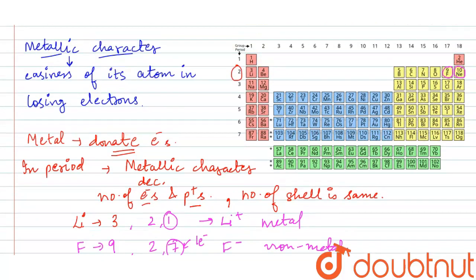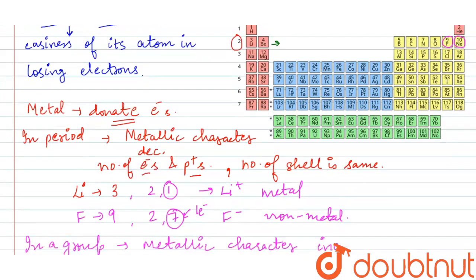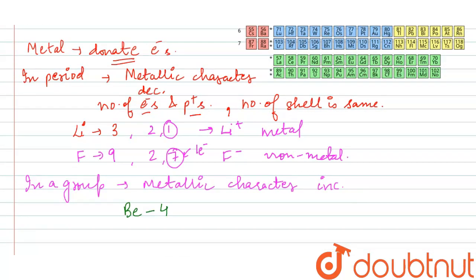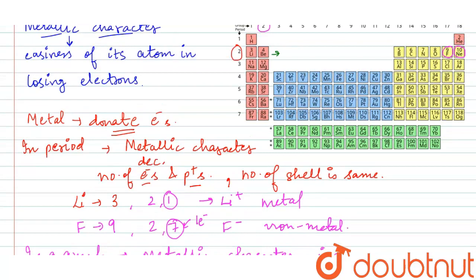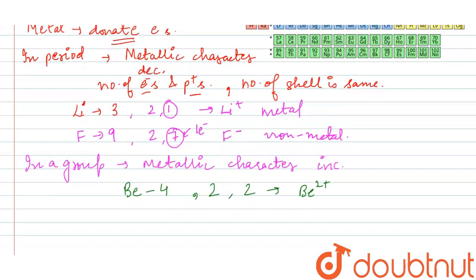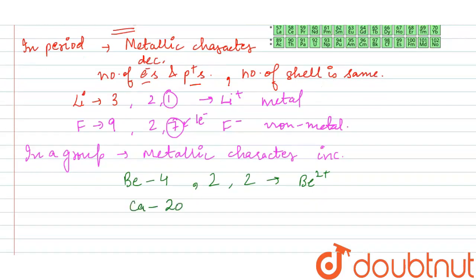So metallic behavior increases down the group. For example, in group 2, beryllium has atomic number 4 with configuration 2,2, having only two shells. The outermost shell allows beryllium to form a 2+ cation. Calcium in the same group has atomic number 20 and is more metallic because it has more shells.